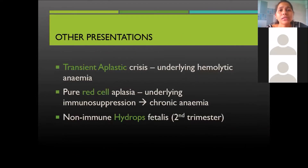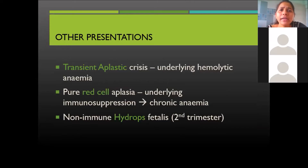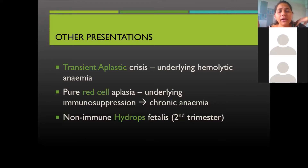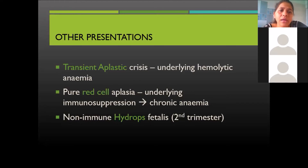Other presentations include transient aplastic crisis, especially in patients with pre-existing hemolytic anemia who get a superadded Parvovirus infection. The bone marrow temporarily stops synthesizing RBCs, causing severe anemia with hemoglobin less than five. There is also pure red cell aplasia leading to chronic anemia, often occurring in immunocompromised adults.